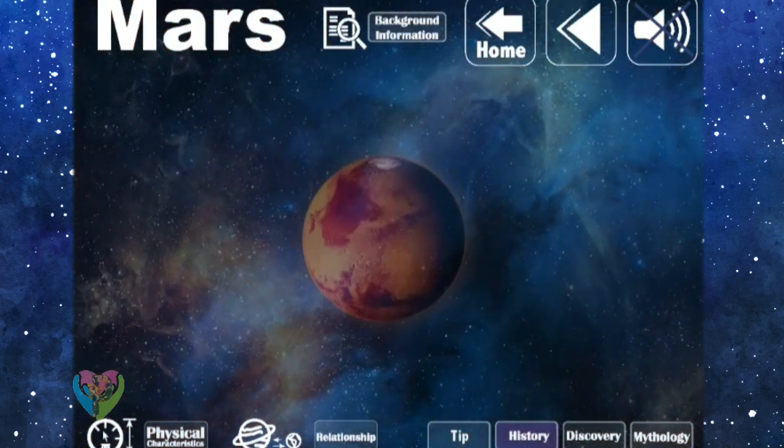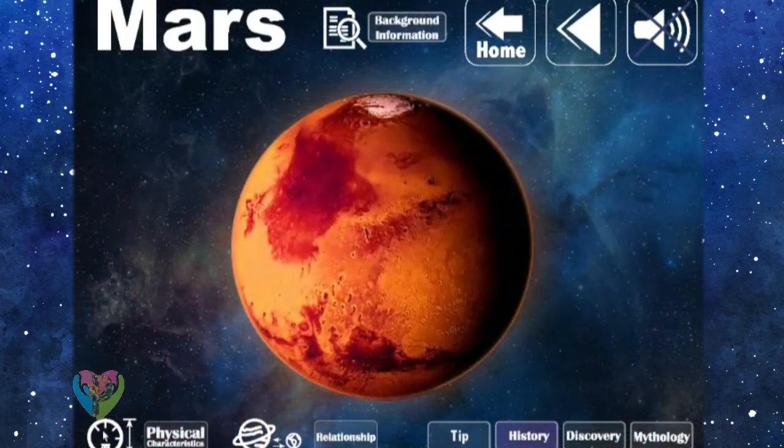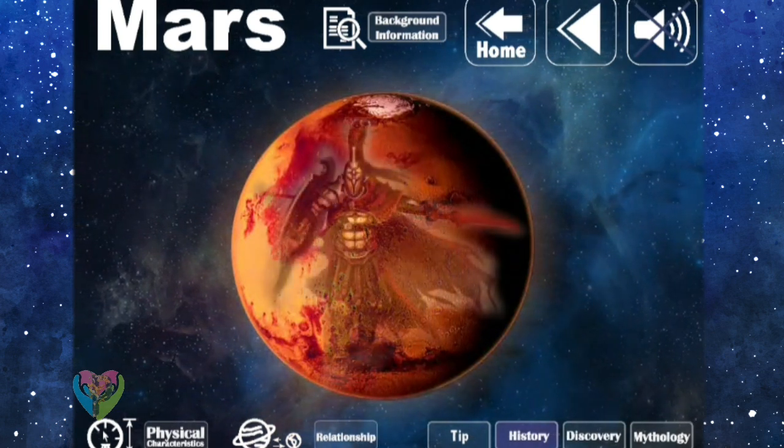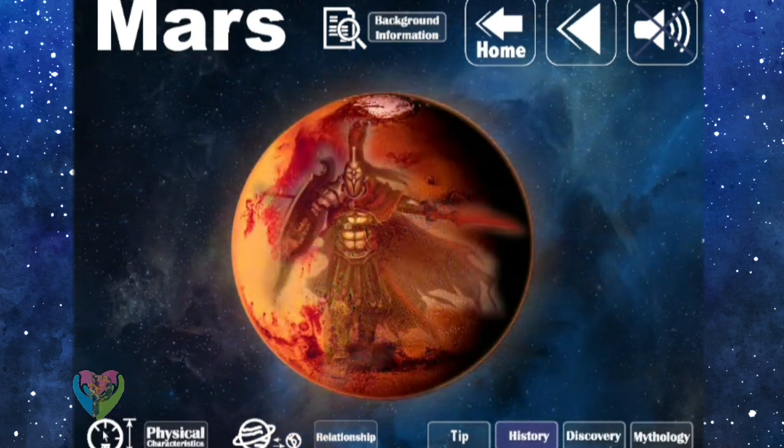In Greece, they called Mars as Ares, which is the god of war. Sometimes Mars is also called the Red Planet.